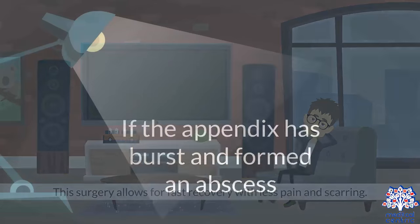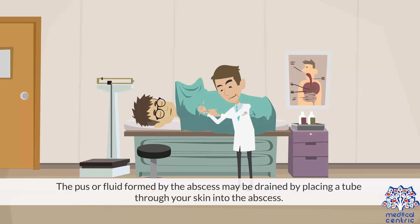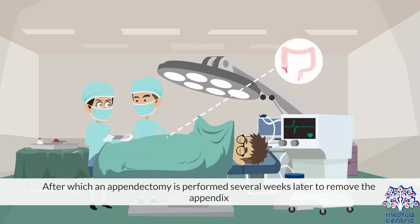If the appendix has burst and formed an abscess, the pus or fluid formed by the abscess may be drained by placing a tube through your skin into the abscess. After which, an appendectomy is performed several weeks later to remove the appendix.